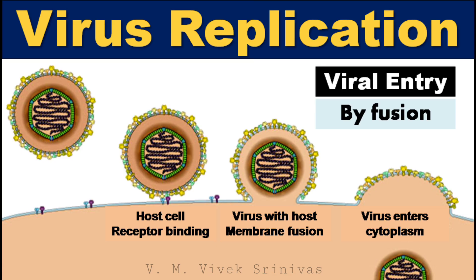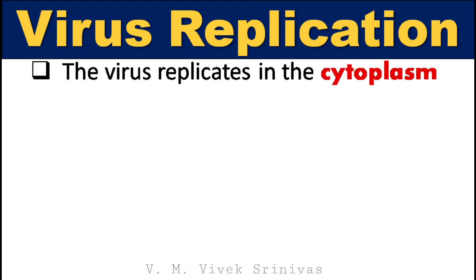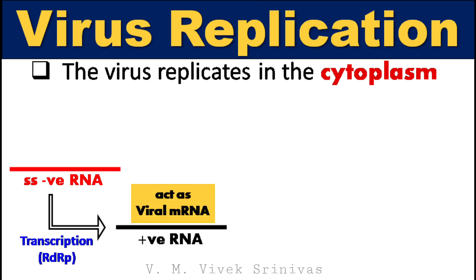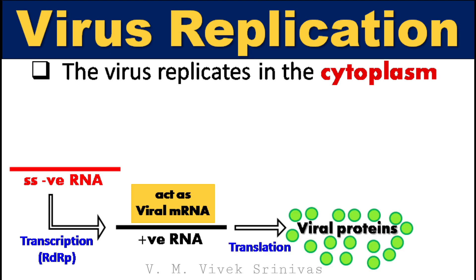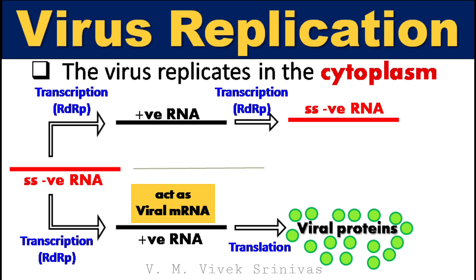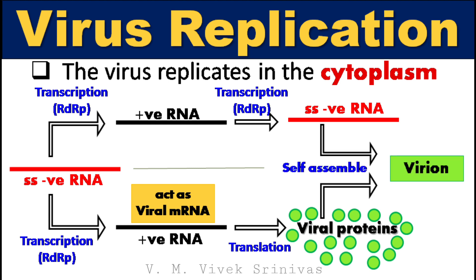Virus replication. The Newcastle disease virus enters the host by fusing the viral envelope with the host cell membrane. During fusion, viral proteins like hemagglutinin, neuraminidase, and fusion proteins may get integrated into the host membrane. Following entry, the virus replicates in the cytoplasm. The genome is negative-sense RNA, so it cannot be translated or be infectious on its own. First, it must be transcribed to positive-sense RNA using the virus-encoded transcriptase enzyme, RNA-dependent RNA polymerase. This transcribed positive-sense RNA, similar to mRNA, is then translated to viral proteins. The negative-sense viral RNA is also transcribed to a complementary strand. Later, the transcribed negative-sense viral RNA and the translated viral proteins self-assemble to form virions.